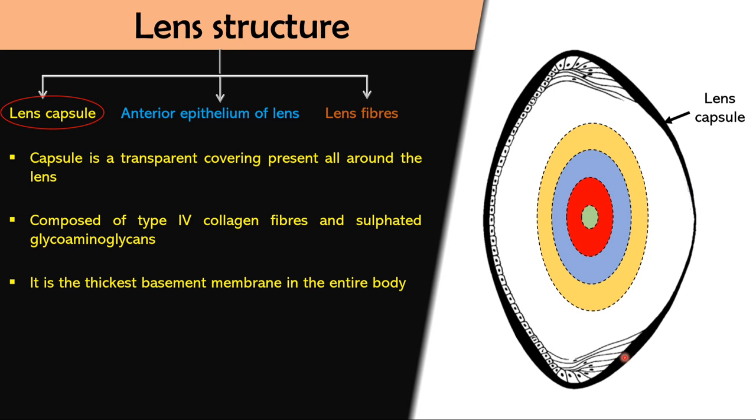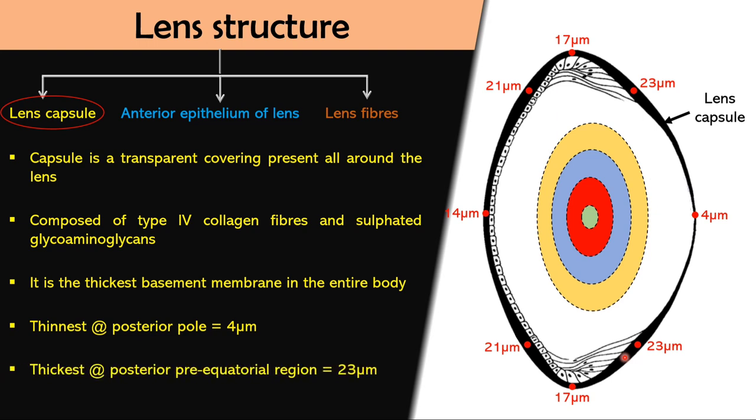the thickness of lens capsule is not constant everywhere. Instead it varies around the lens being thinnest at the posterior pole and thickest at the posterior pre-equatorial region, that is near the equator having thickness of 23 microns.